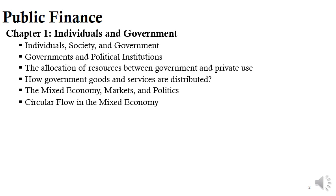Governments also purchase outputs of business firms such as paper, cars, and guns. To pay for them, the government requires businesses and households to make various payments such as taxes and fees, and may require resources be made available at below-market rates of compensation. The government uses these productive resources to produce goods and services including national defense, roads, schools, and police and fire protection. The central transactions are made through political institutions, while the upper and lower transactions of the circular flow are made through market institutions.